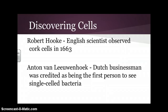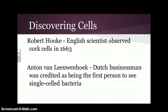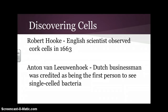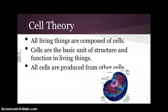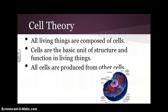Another person listed in your textbook is Anton van Leeuwenhoek. He was a Dutch businessman and he was credited with being the first person to see single-celled bacteria. You do need to make sure this is written down — this is cell theory. Cell theory has three components in our textbook: all living things are composed of cells; cells are the basic unit of structure and function in living things; and all cells are produced from other cells.